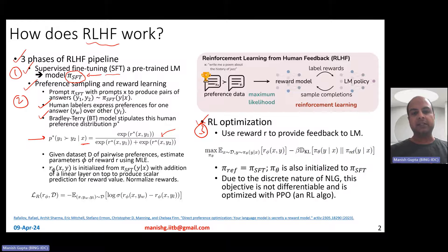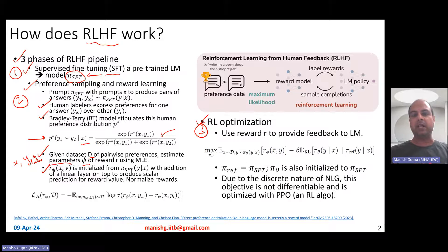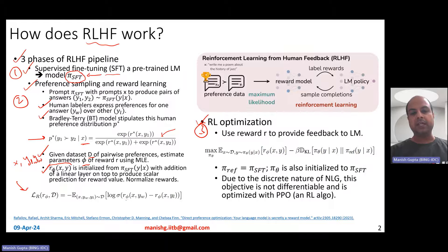You take a large dataset D where each instance comprises X, YL, and YW — an input, a preferred response, and a less preferred response. You then estimate the parameters phi of the reward model R_phi(X,Y), and optimize a loss that tries to ensure the reward for YW is higher than the reward for YL — essentially minimizing a log-sigmoid loss. This is learned using maximum likelihood estimation.